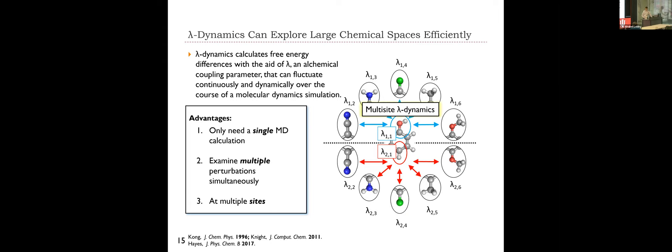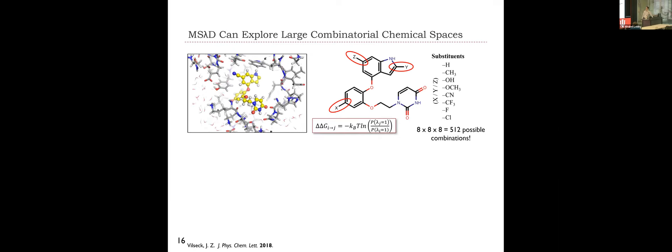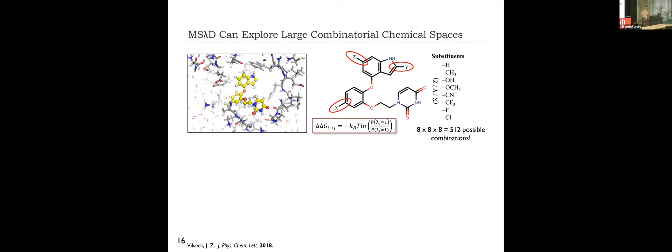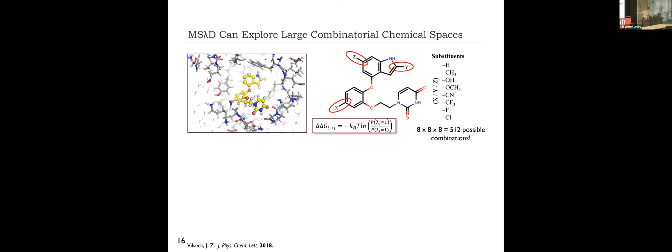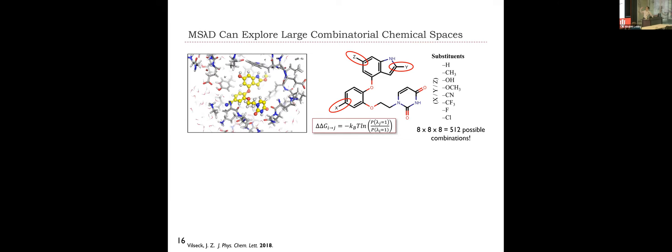What does this really look like? We call this multi-site lambda dynamics. This was an example that I did in my postdoc. Here on the right, we have a ligand shown in a stick diagram. And we have a series of eight different substituents: hydrogen, methyl, hydroxyl, methoxy, cyano, trifluoromethyl, fluoro, chloro. Eight different substituents that we then want to sample at three different sites. These sites are labeled X, Y, and Z on our chemical structure. At the base level, it's a molecular dynamic simulation. All of the atoms are moving according to those forces that they feel, like magnets - you have magnets that attract and magnets that repel. And so the atoms are behaving in a similar manner.